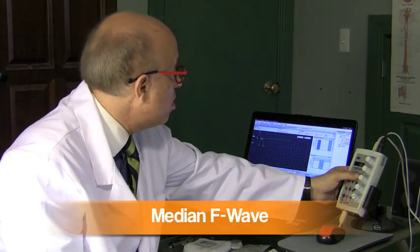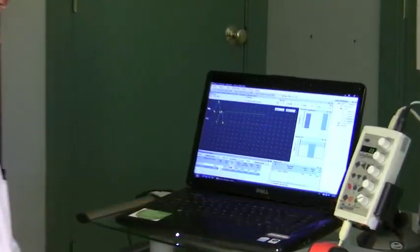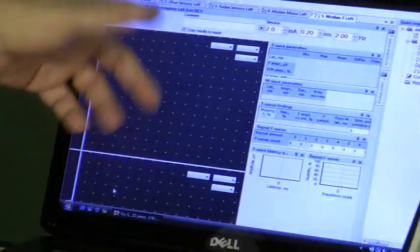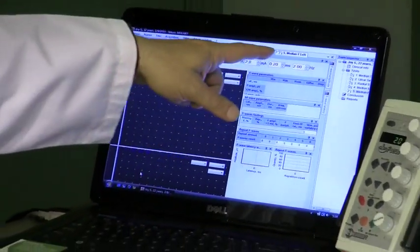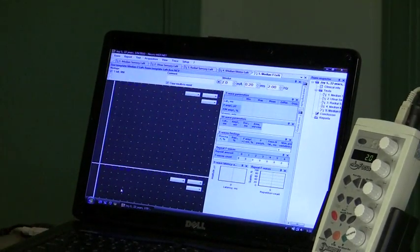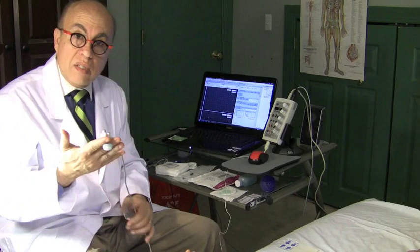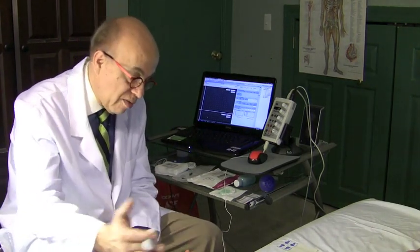Let's go into the F wave mode, and I'm going to press next here. You see that the display changed a little bit. I'm going to show you what that means. It says median F left.